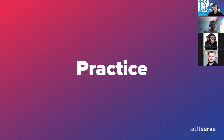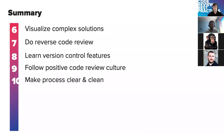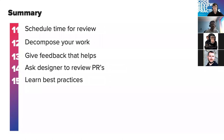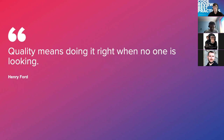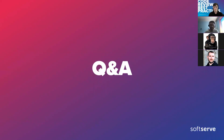Quick summary: work with board from right to left, clarify requirements, use critical thinking, follow ticket description, use feature branches as target, visualize complex solutions, do reverse code review, learn version control features, follow positive code review culture, and make the process clear and clean. And some lessons learned: schedule time for review, decompose your work, give feedback that helps, ask designers to review your PRs, and just learn best practices. I want to end with this quote from Henry Ford: 'Quality means doing it right when no one is looking.' That's it — I hope it was useful. Now it's Q&A time.